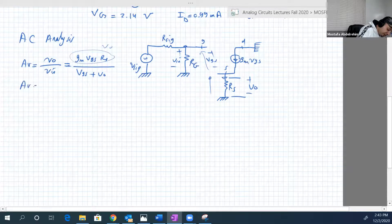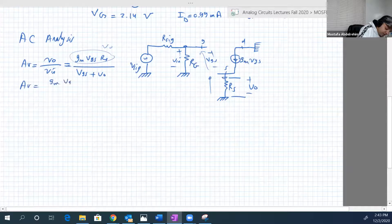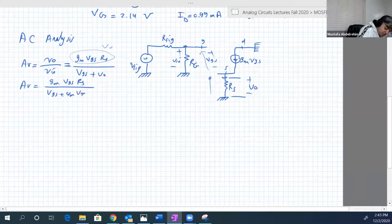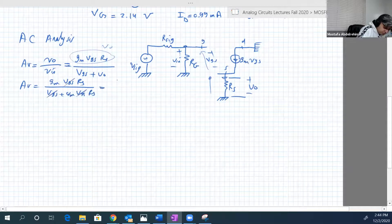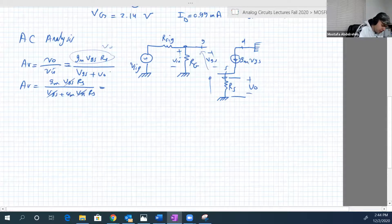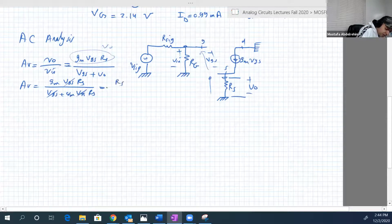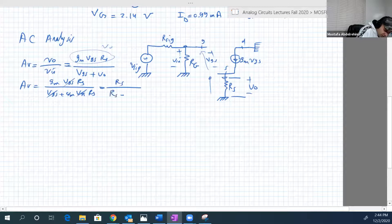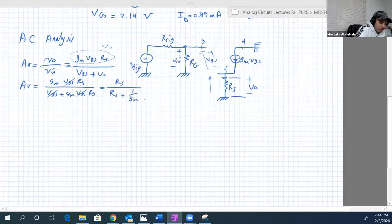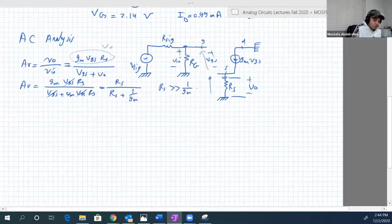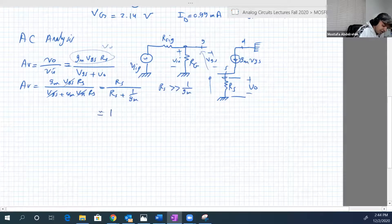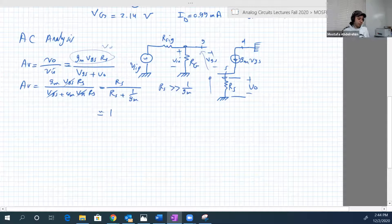So AV equal to GM VGS RS over VGS plus GM VGS RS. VGS will go away, so and we can divide by GM, so this will be RS over RS plus one over GM. Again, usually RS is much larger than one over GM, so this is approximately equal to one.